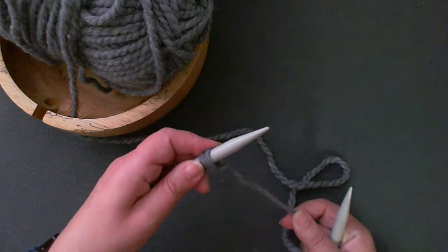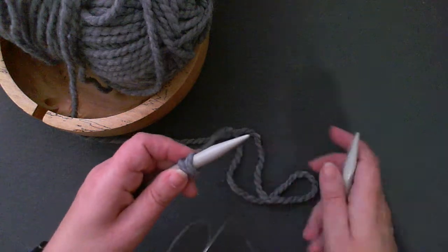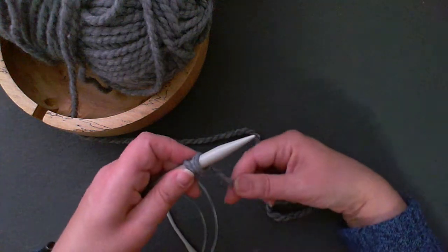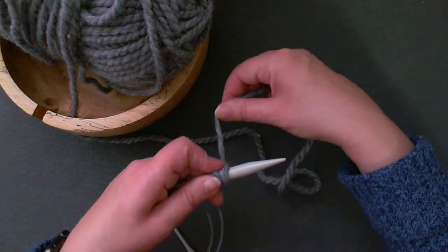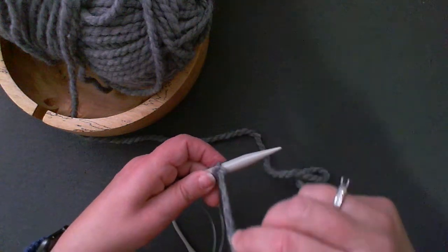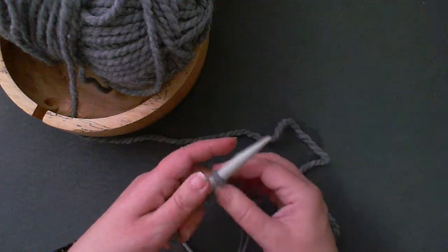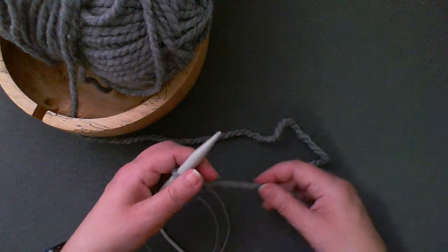Then I pull straight down and then I take that yarn to the back away from myself, over the needle, and down. And there I have my first slipknot.